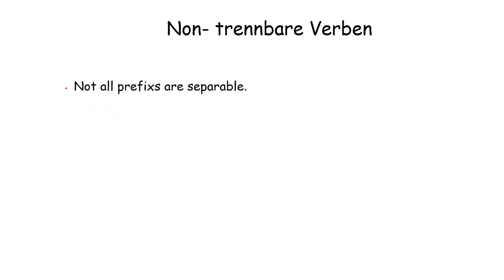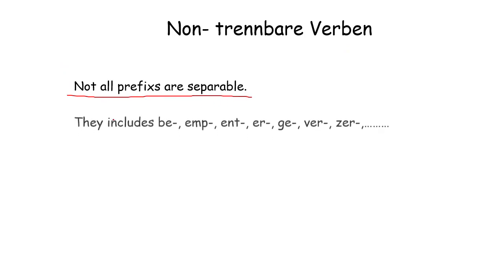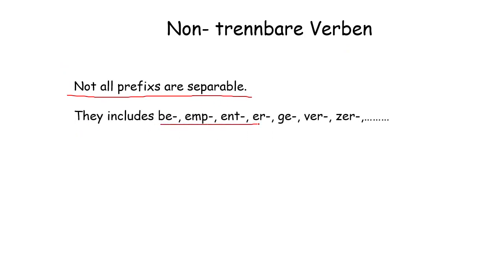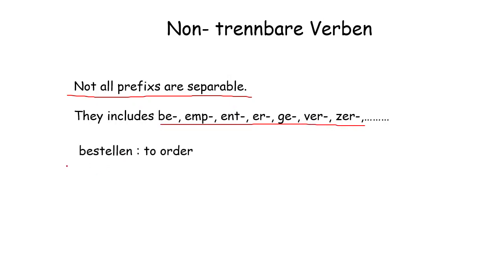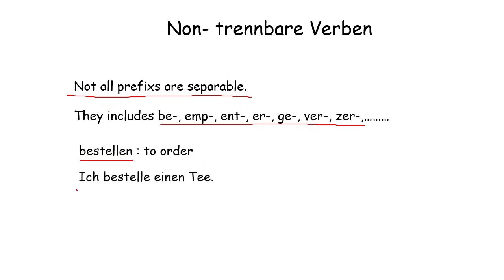Non-separable verbs. Not all prefixes are separable. If the verbs start with certain prefixes, they will not separate. For example, 'bestellen' means 'to order'. They will not separate — they come together at the second position, like a normal verb. 'Ich bestelle' — I order a tea.